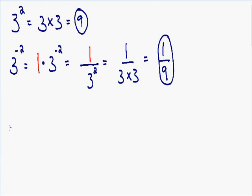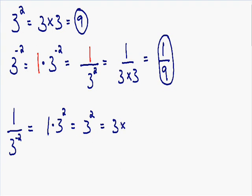Let's go over another example. Let's say we have a negative exponent in the denominator — 1 over 3 with a negative 2 exponent. We're going to use the same idea: take the negative exponent and make it positive, but this time in the opposite direction. A negative exponent in the denominator is a positive exponent in the numerator. So this 3 with a negative 2 exponent in the denominator becomes a 3 with a positive 2 exponent in the numerator. Since multiplying by 1 is redundant, this simplifies to 3 squared. 3 times 3 is 9, so 1 over 3 to the negative 2 equals positive 9.